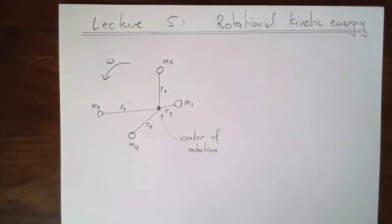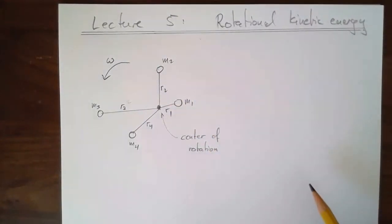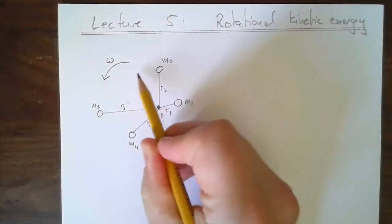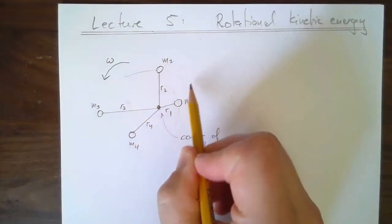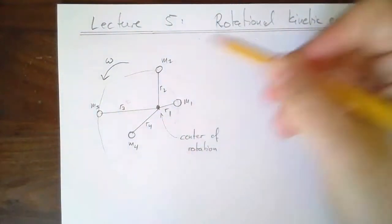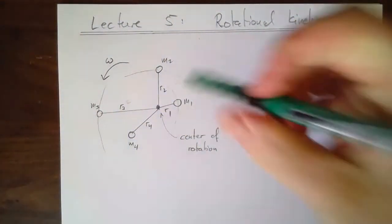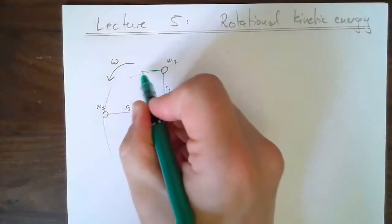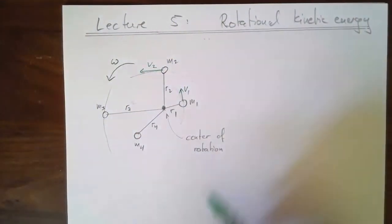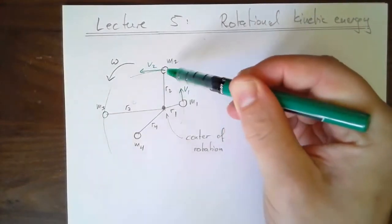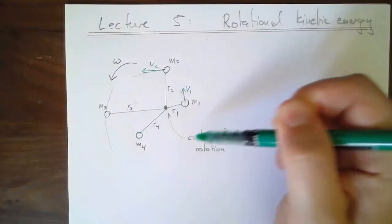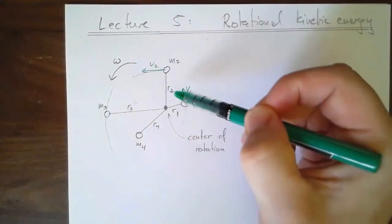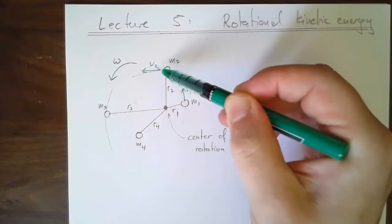This whole system is rotating around the center of rotation with angular velocity omega. That means each mass is following a circular path. This one might have velocity v1, this one v2 — v2 is bigger than v1 because it takes the same amount of time to go around, but this one is traveling along a bigger circle. V is omega times r, and if r2 is bigger than r1, then this one goes faster.